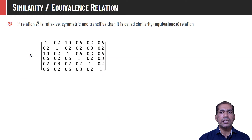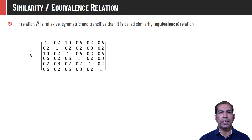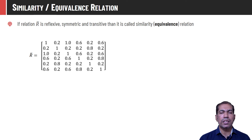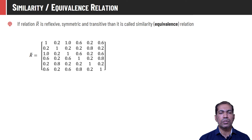A relation is said to be a similarity or equivalence relation if it possesses the properties of reflexivity, symmetricity, and transitivity. As we can see from this relation matrix, all diagonal elements have membership value 1, so it is reflexive. The transpose of the relation matrix is the same as the relation matrix itself, and hence this relation is symmetric. And R̄² of this relation is contained within R̄, so it is transitive also. Therefore, the given relation matrix represents a similarity or equivalence relation.